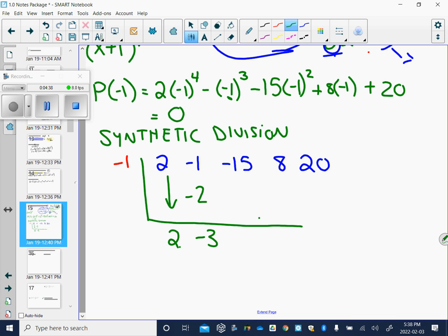Negative 3 times negative 1 becomes positive 3. Adding together, we get negative 12. Negative 12 times negative 1 is positive 12. Adding those together, we get 20. 20 times negative 1 becomes negative 20. We add that together and we get 0. So we know we have done this correctly.